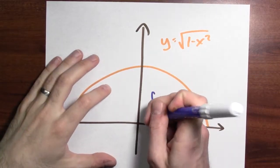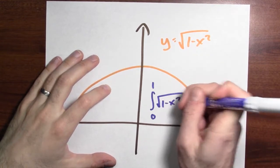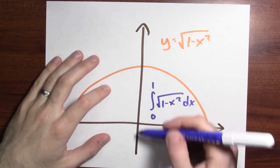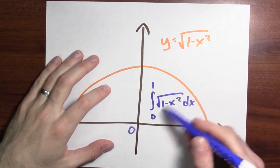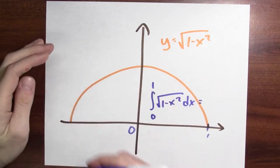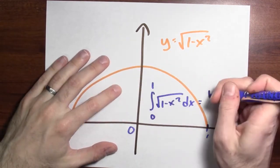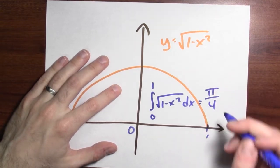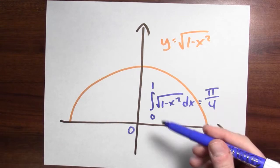We can compute this integral geometrically. Let's think about the integral from 0 to 1 of the square root of 1 minus x squared dx. That just calculates the area inside this quarter circle. The whole unit circle has area pi, so that quarter circle has area pi over 4. This is a geometric calculation of an integral.